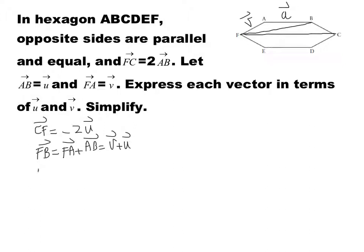The next one is vector FD. Vector FD — to write FD, I can write FD as FC plus CD. Now I know that FC is twice AB, which is u, so it's going to be 2u. And CD is parallel to FA, vector v, but in opposite direction. So it's going to be minus v. So it's going to be 2u minus v.